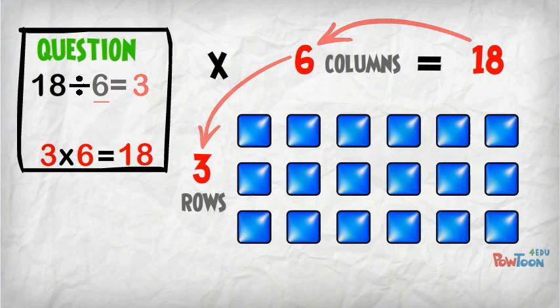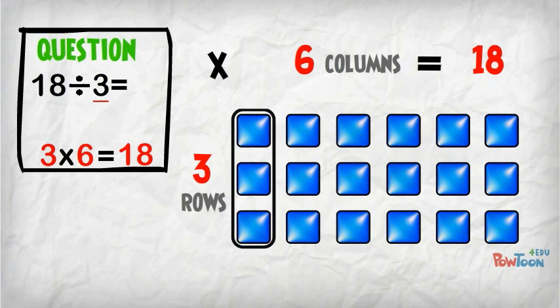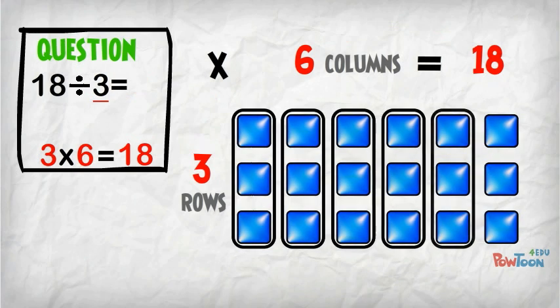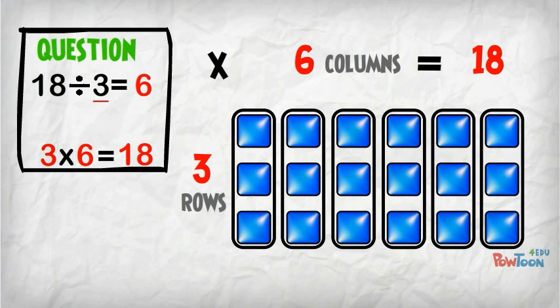If the question was 18 divided by 3, we would make groups of 3. There are 6 groups of 3 in 18. So 18 divided by 3 is 6.